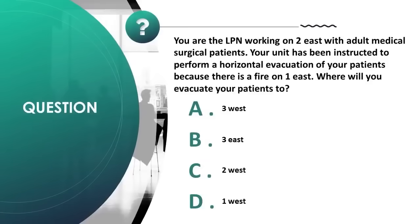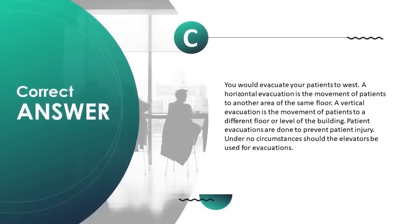You are the LPN working on 2 East with adult medical-surgical patients. Your unit has been instructed to perform a horizontal evacuation because there is a fire on 1 East. Where will you evacuate your patients? A) 3 West, B) 3 East, C) 2 West, D) 1 West. Correct answer is C. You would evacuate your patients to 2 West.